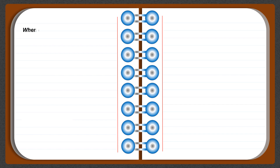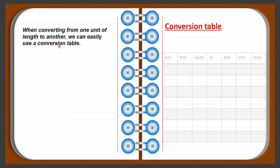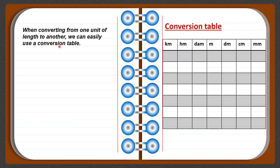When converting from one unit of length to another, we can easily use a conversion table. A conversion table is a table containing the units of length measurements through which we convert from one unit to another. We write the units of length measurement starting from the larger to the smaller.